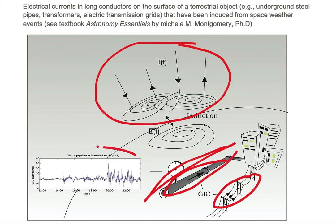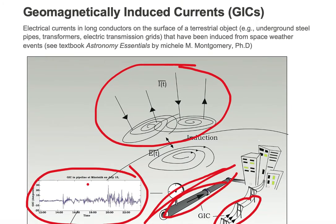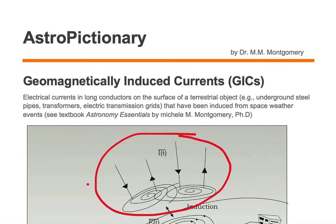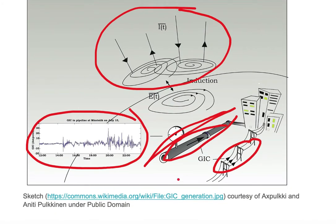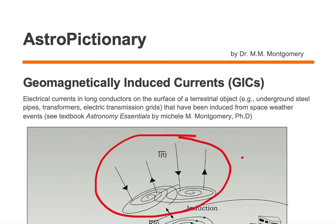Here is an actual recording of a pipeline and a GIC event. GICs can adversely affect pipelines, transmission lines, and electrical grids — these electrical currents in long surface conductors are induced from space weather events.